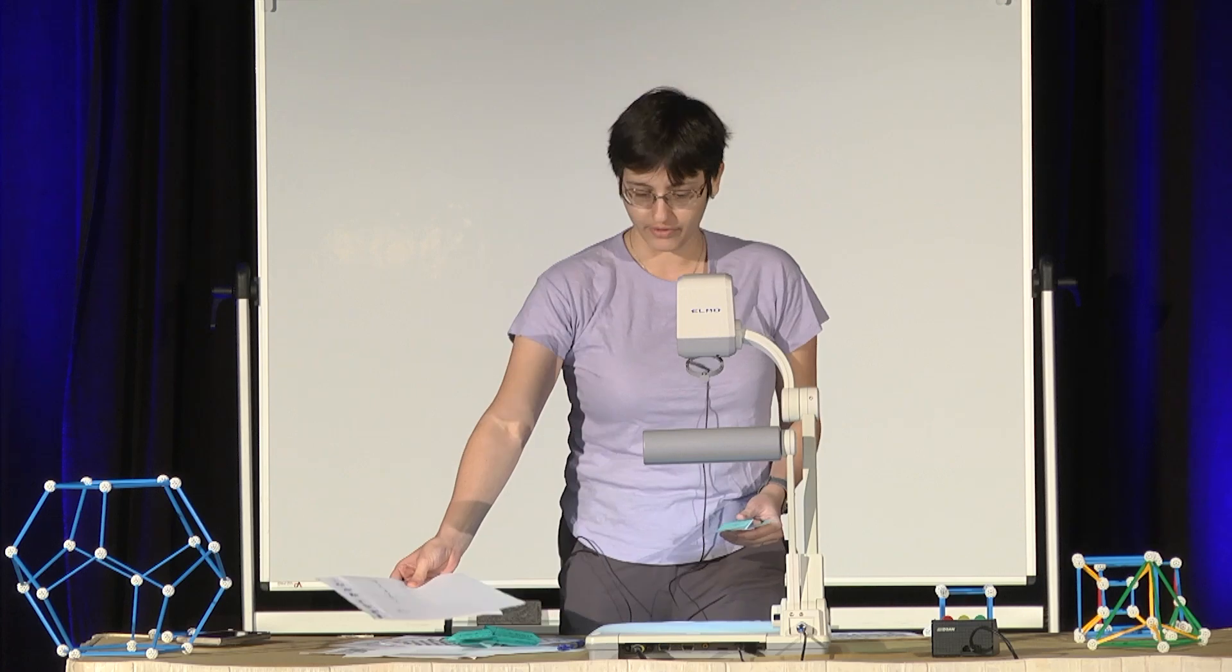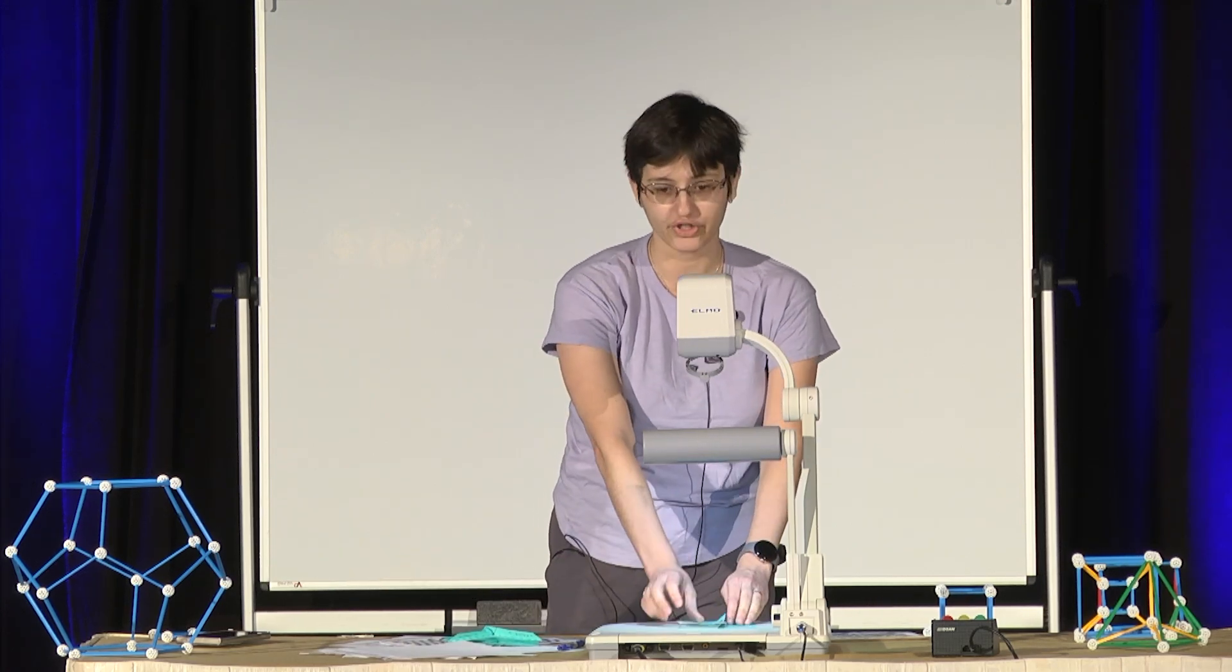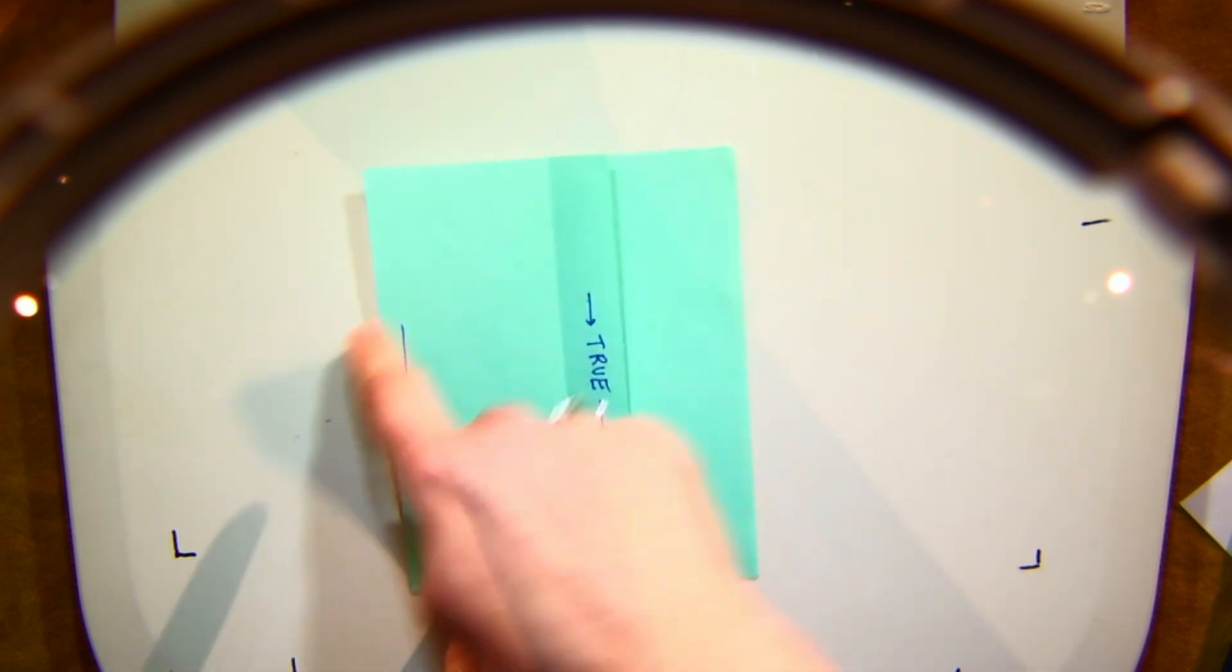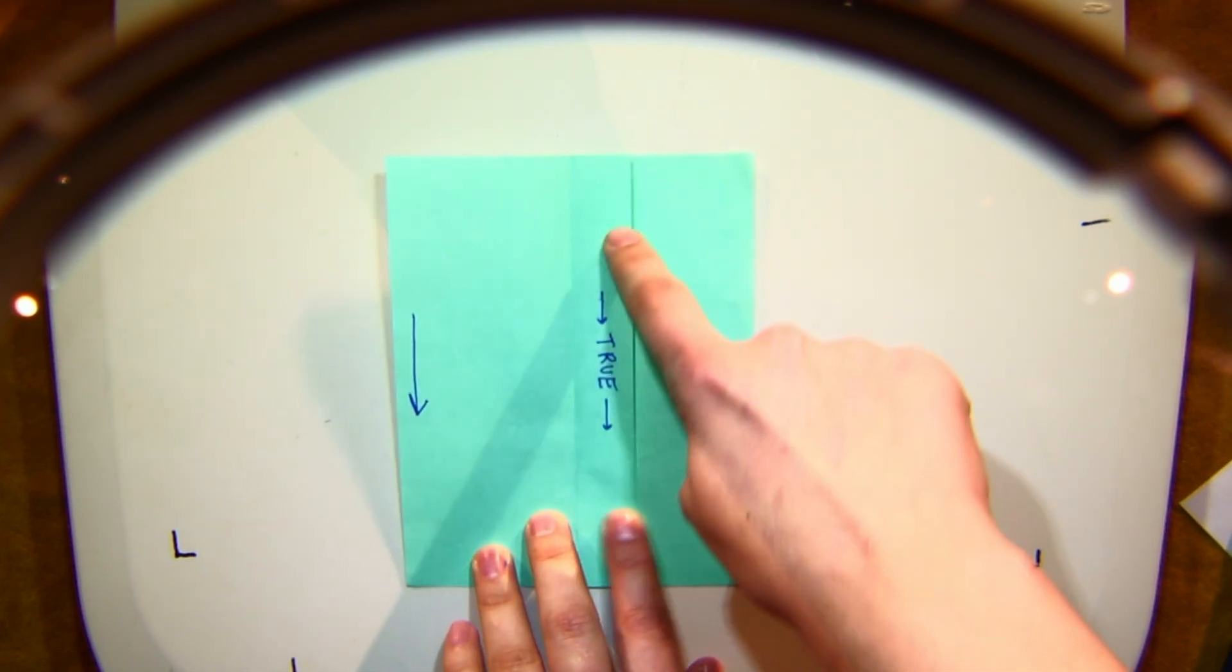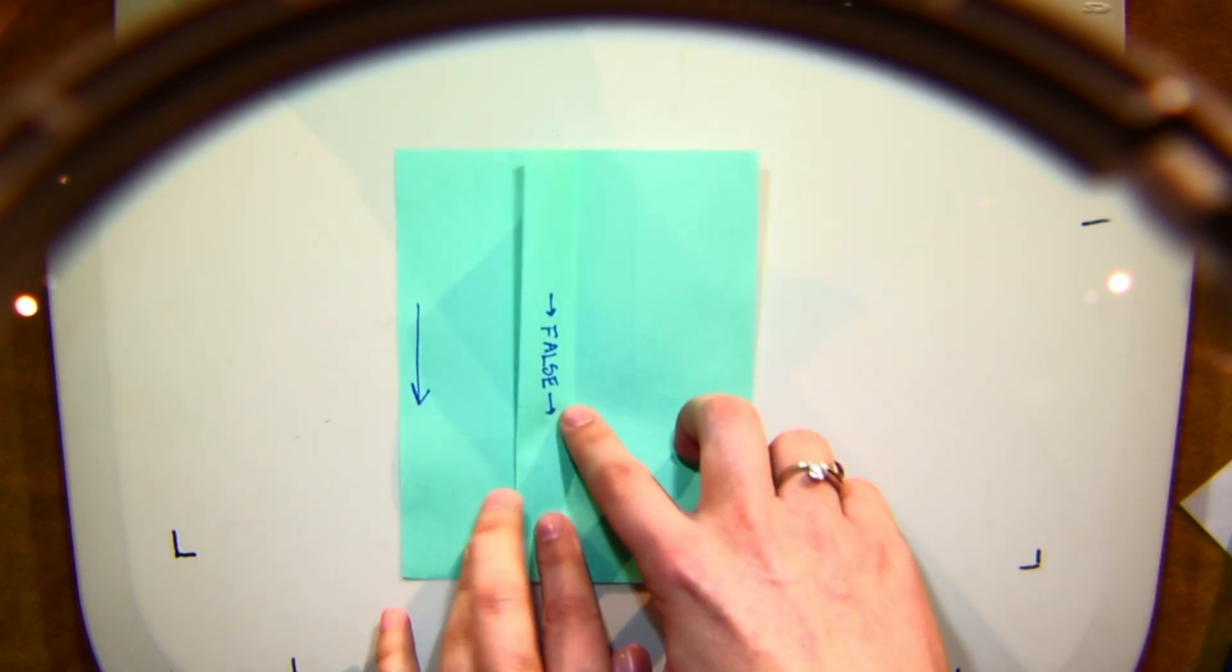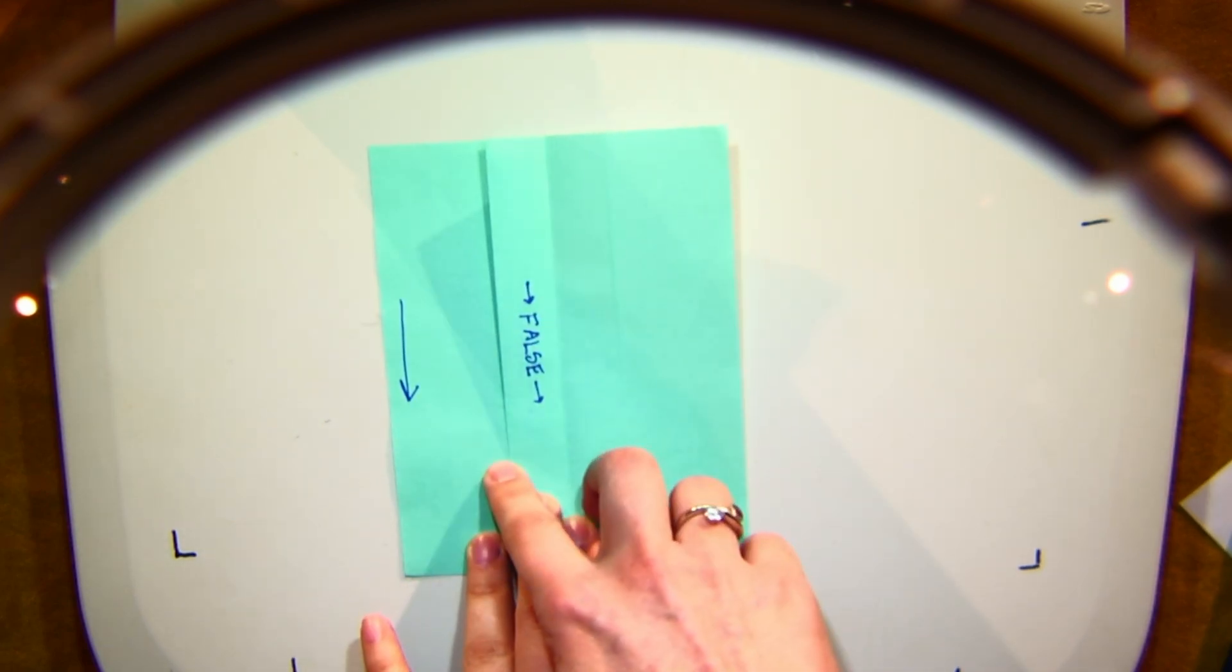So here's how that works. We have a sheet of paper and it has a pleat on it. And the paper is oriented in one direction. And if it is true, the pleat is folded in one direction. And if it is false, it is folded in the other direction.